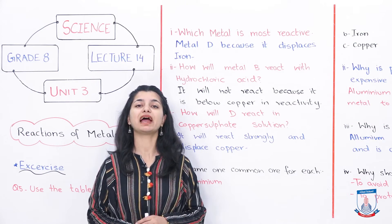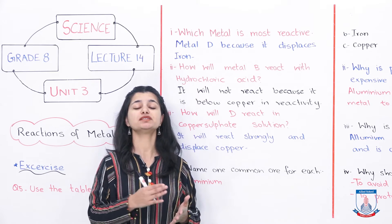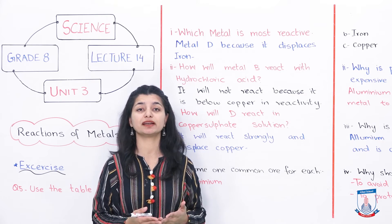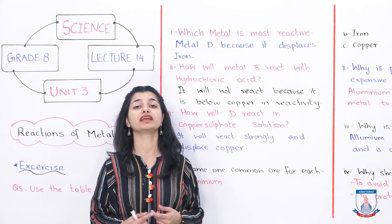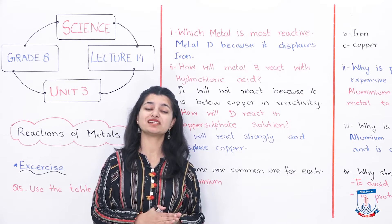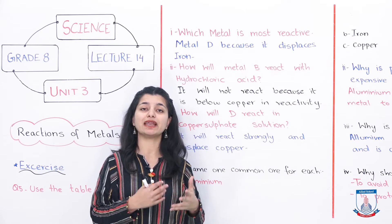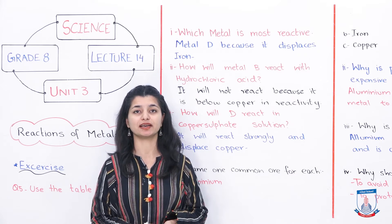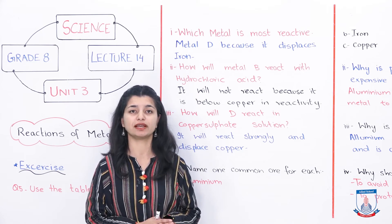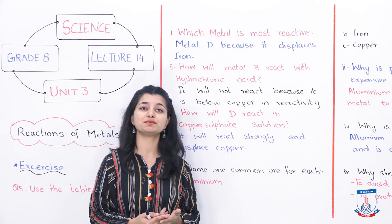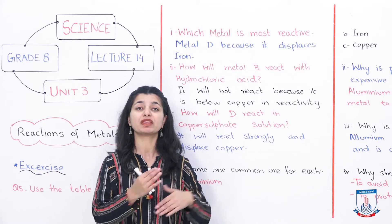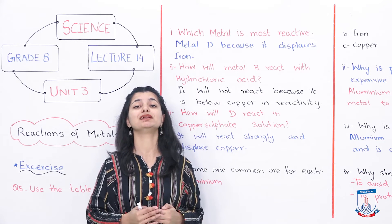From the table, you can see which metals are displaced and which are not. If a metal displaces iron sulfate, you know it is more reactive than iron. If it doesn't displace iron, it means it is lower than iron in the reactivity series. The metal that displaces copper means it is lower than iron but still above copper on the reactivity series. From this, you can tell which metal is most reactive.